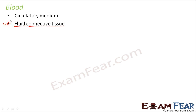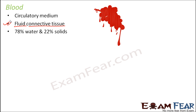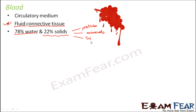We know why blood is called a connective tissue — connective tissue is the type of tissue that connects different parts of the body. Examples include ligaments and bones. Similarly, blood connects different parts of the body by flowing throughout it. If you look at the composition of blood, it is almost 78% water, and only 22% solids. That 22% of solids contains a lot of proteins, minerals, and lipids.